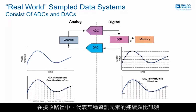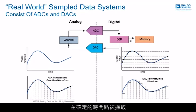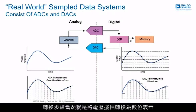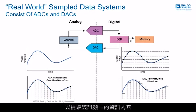In the receive path, a continuous analog signal that represents some element of information is captured at a finite point in time. This signal could be represented as a voltage swing over time. The conversion step occurs when that voltage swing is converted to a digital representation. The resulting digital codes can be processed to extract the information content within that signal.